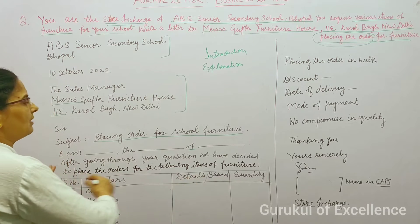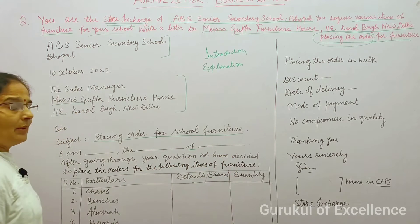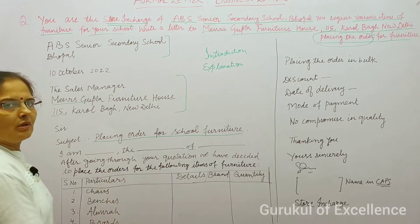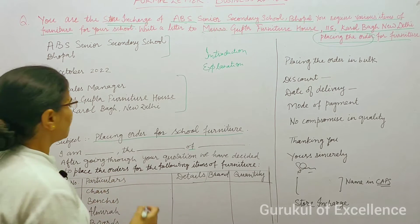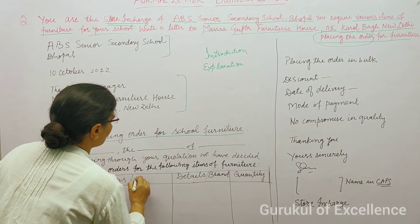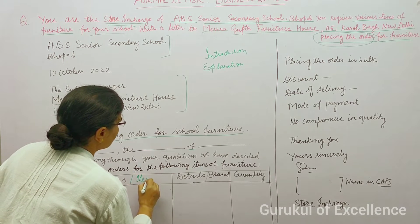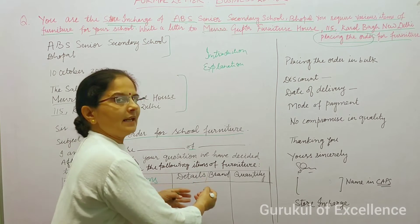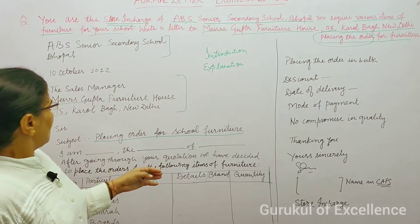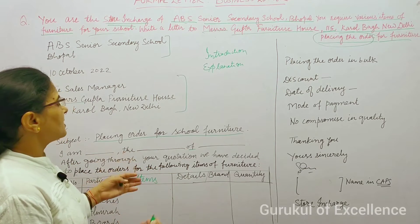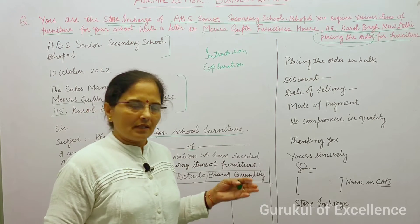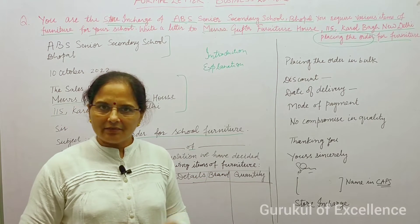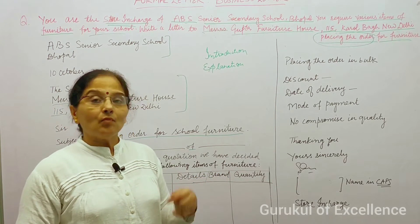Now we prepare a table for the items. In the table, we write a serial number, then the particular item name, then the material — for example, the brand or type of furniture, such as wooden furniture.